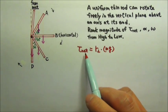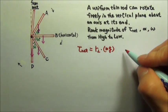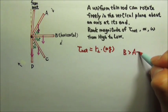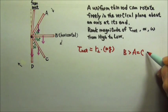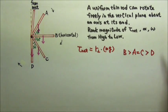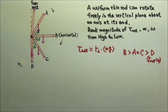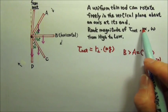So if I rank the net torque by ranking the lever arm, I would have B is the highest, and then A and C would have the same lever arm, and then it's D. For D, there's no lever arm, so the net torque is zero for D.